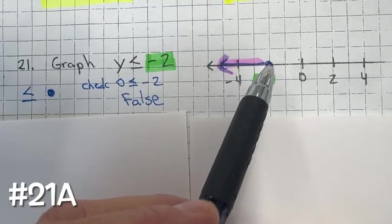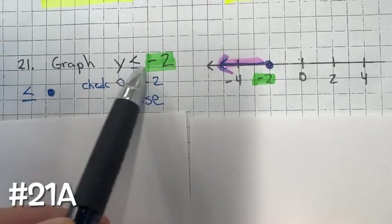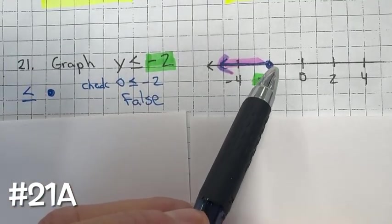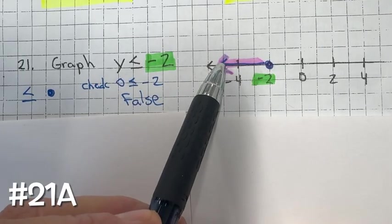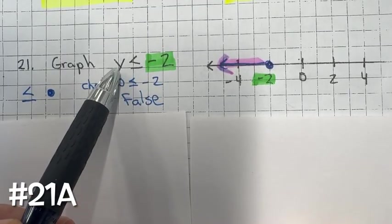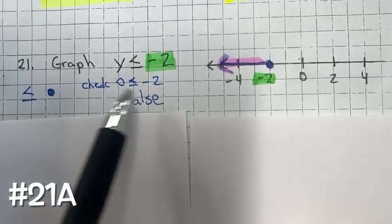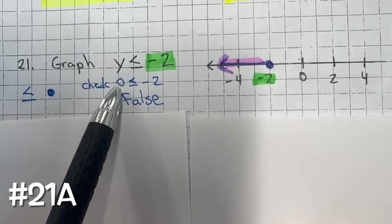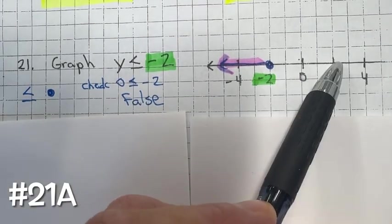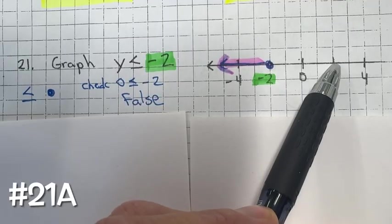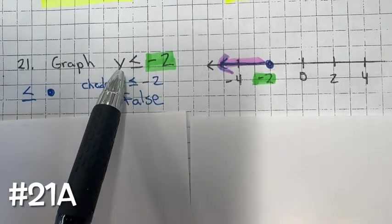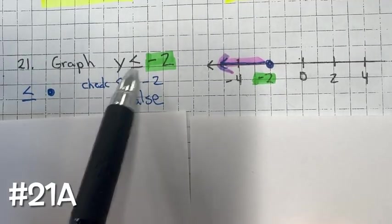Since the inequality has an equal to sign, we're going to fill in the circle on the number line. If there wasn't an equal to sign, it would be an open circle. To check which way to draw the arrow, test y equals 0: is 0 less than or equal to negative 2? No, that's false. So the arrow goes to the left. For example, negative 4 is less than or equal to negative 2, which is true.